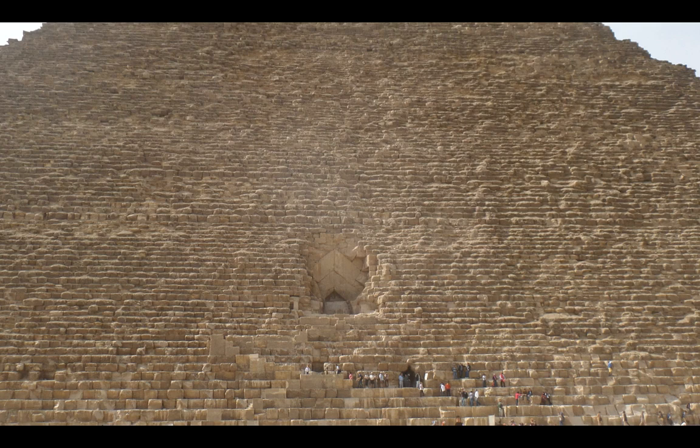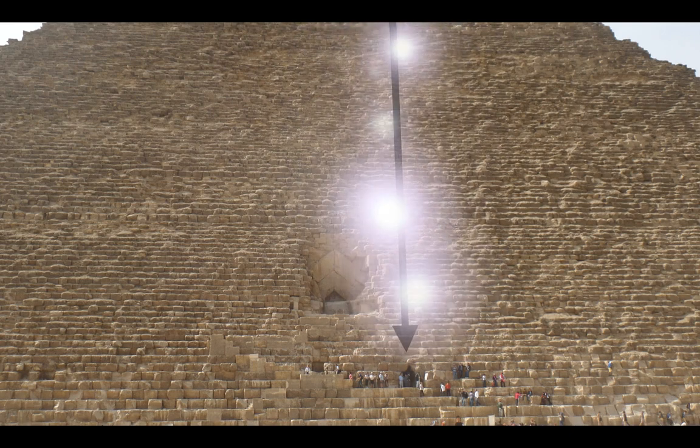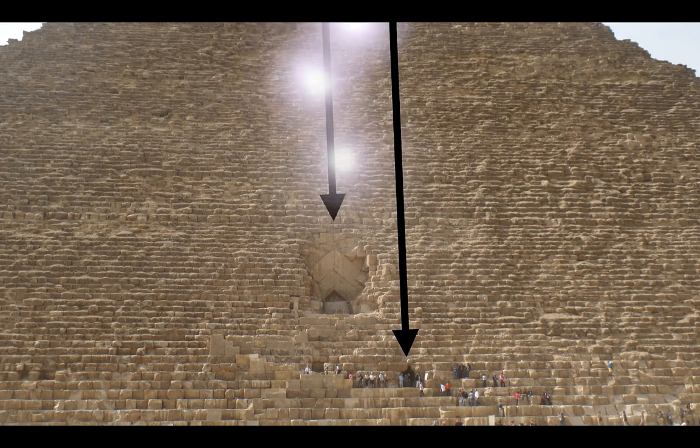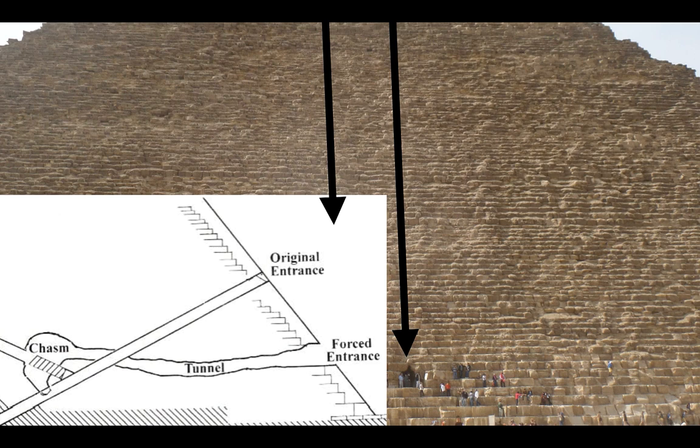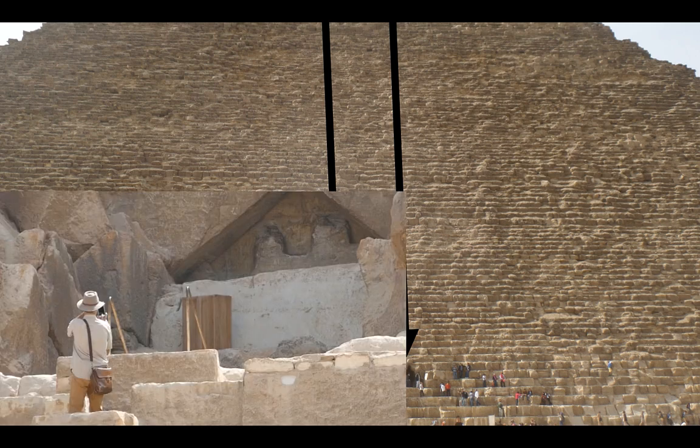So you can see the two entrances there, El Mamoun's entrance, which every visitor goes into now where all the people are gathered there. And then you can see at the 19th course, the original entrance, which has been closed by the Egyptian government for a long time. So there's an elevation view. You can see the forced tunnel by El Mamoun and the original designer's entrance there. Okay.